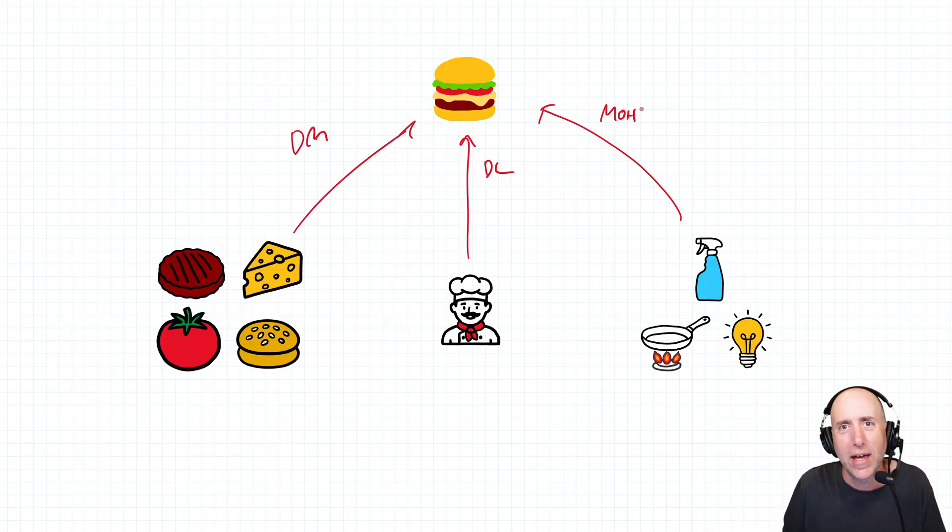obviously utilities or cleaning supplies would be indirect costs and it's difficult to trace them. Also like kitchen rent - if I pay $2,000 a month to rent the kitchen, how many dollars worth of that rent went into the burger? It's difficult to trace.